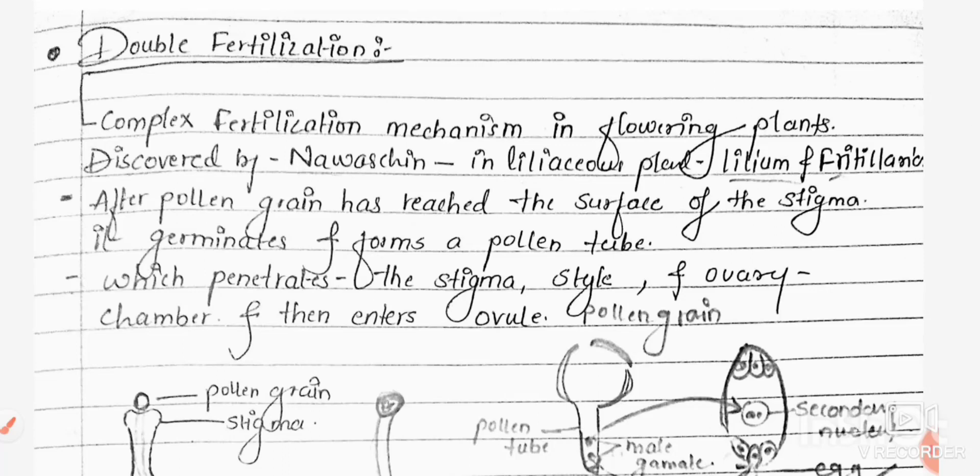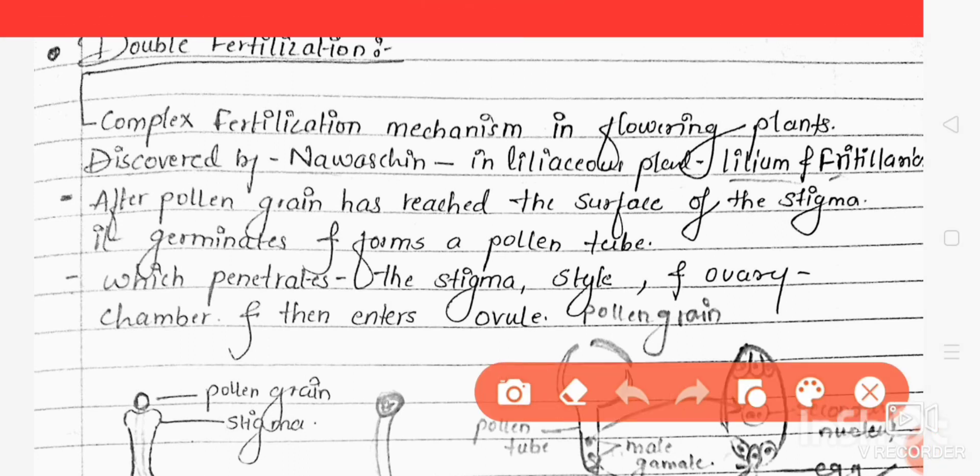Hello everyone, welcome back to my YouTube channel Floral Bio Canvas. In today's video we are going to discuss about double fertilization. This double fertilization takes place in angiospermic plants, that is the flowering plants, and it was discovered by Nawaschin.